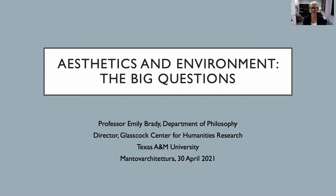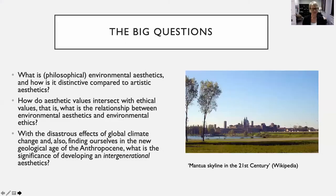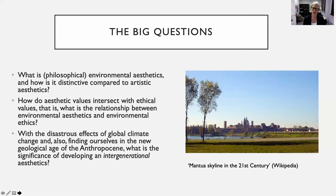What are those big questions? First, I want to say that I'm a philosopher — that's my main discipline — but I do consider myself an interdisciplinary philosopher. I spent many years among critical human geographers and also among physical geographers in my previous position in Scotland. The first question, a really important one which really got the field going, is: what is environmental aesthetics and how is it distinctive compared to artistic aesthetics?